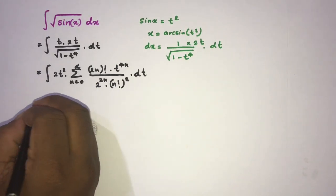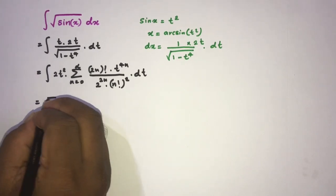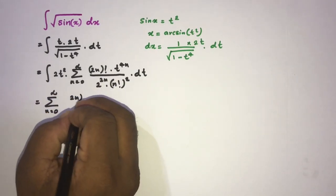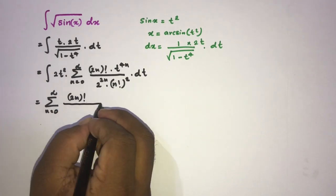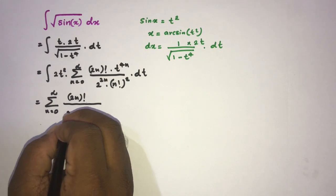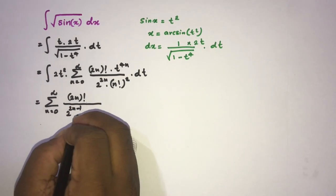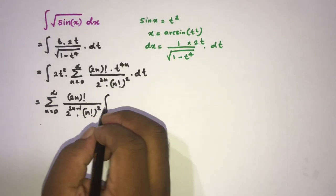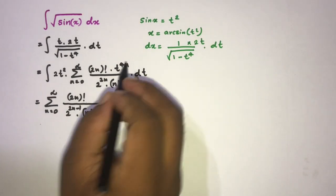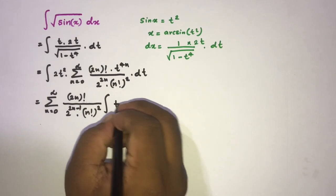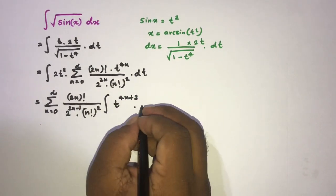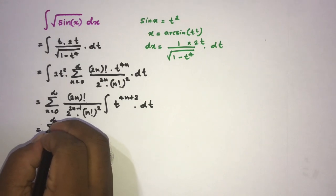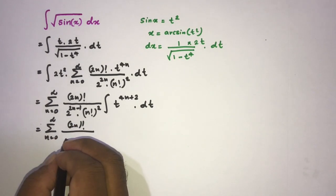As the next step, we switch the integral sign and the sigma notation. So we have the sum from n equals 0 to infinity of (2n)! over 2 to the power (2n minus 1) times (n!)², times the integral of t to the power (4n plus 2) dt. Here we combined t squared from the numerator with t to the 4n to get t to the 4n plus 2.